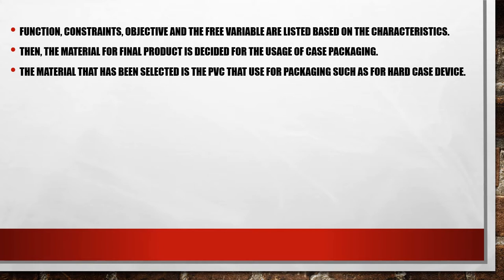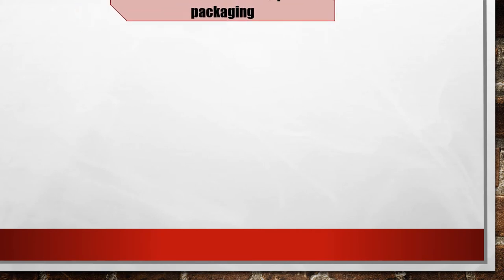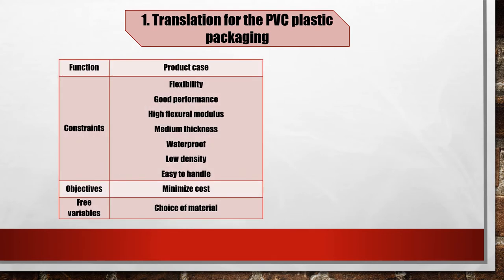For this assignment, the material that has been selected is PVC, used for packaging such as for hard case devices. The table below shows the specific parts of our product with the materials that need to be used and the reasons why it is being chosen. The constraints in selecting the material are flexibility, performance, high flexural modulus, medium thickness, and low density. The objective of selecting the material is to minimize cost. The selected materials for type of plastic packaging are HDPE, LDPE, polypropylene, and PVC.